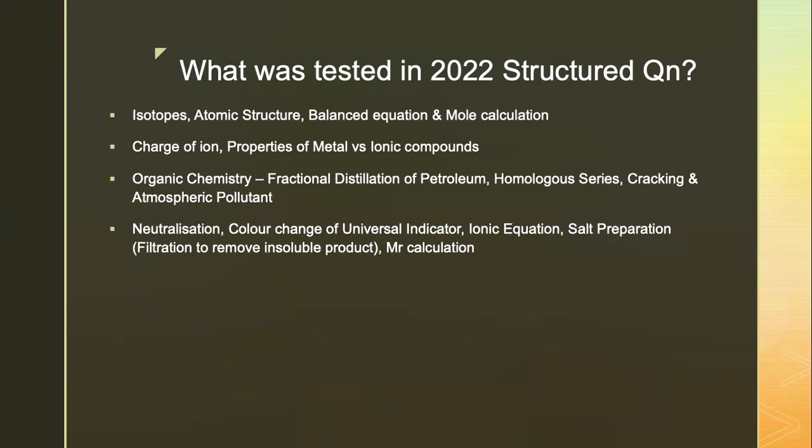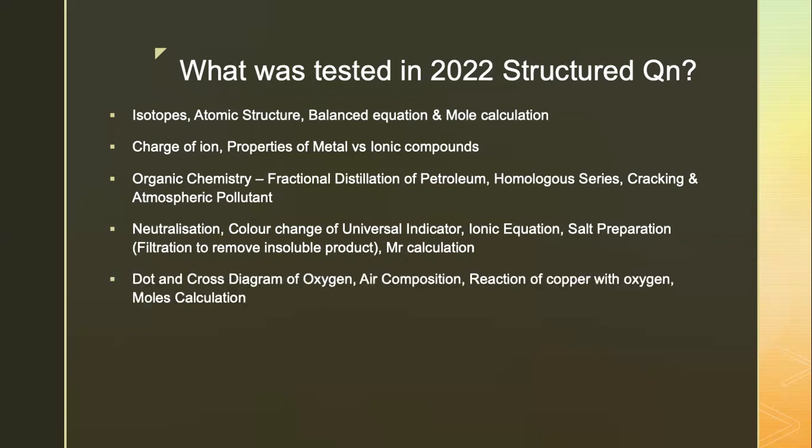Neutralization, color change of universal indicator, writing ionic equations, salt preparation — in particular the filtration to remove insoluble product, which is barium carbonate — and Mr calculation. Quite a number of questions related to mole calculation in the structured section. Dot and cross diagram of oxygen, air composition, where students need to know nitrogen has the highest composition of 79%. The reaction of copper with oxygen was tested, where students need to know that only oxygen reacted with the copper, and they need to calculate the volume of air remaining after the reaction is completed.